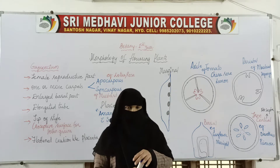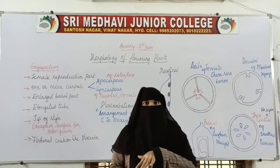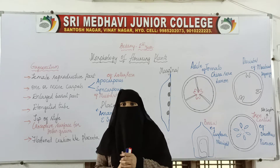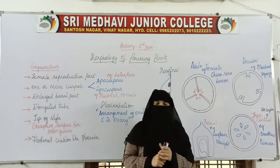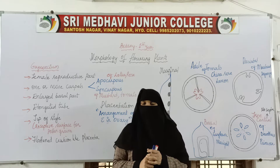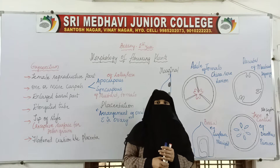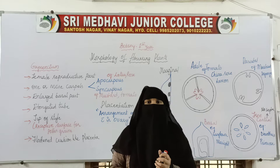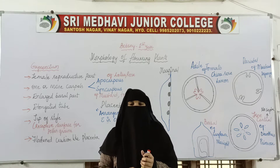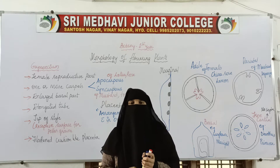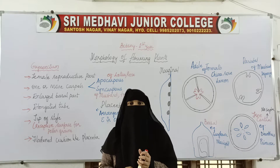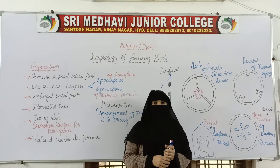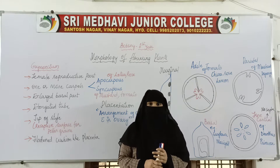Welcome everyone. We are discussing the morphology of flowering plants, specifically the flower. We have already discussed the first three floral parts: calyx and corolla, which are the non-essential or accessory organs. We have also discussed the androecium, which is one of the essential or reproductive organs — the male reproductive organ.